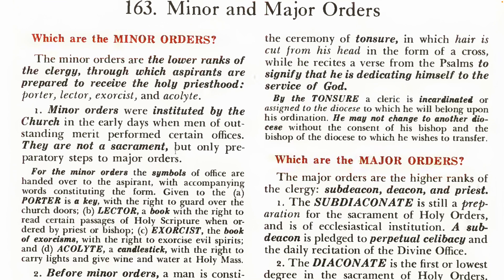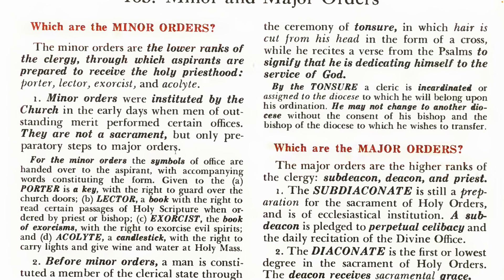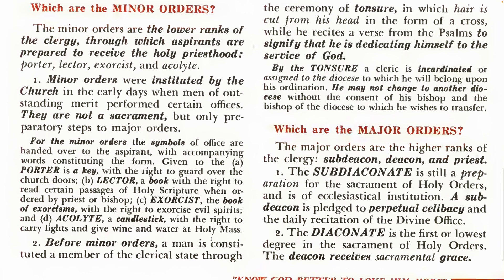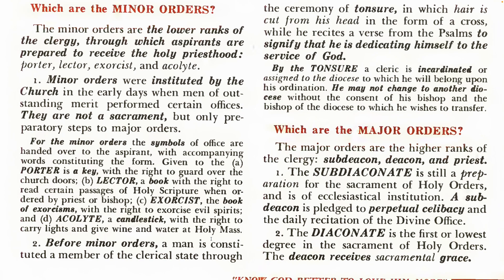The minor orders are the lower ranks of the clergy through which aspirants are prepared to receive the holy priesthood: porter, lector, exorcist, and acolyte. Minor orders were instituted by the church in the early days when men of outstanding merit performed certain offices. They are not a sacrament but only preparatory steps to major orders. The symbols of office are handed over to the aspirant with accompanying words constituting the form. Given to the porter is a key with the right to guard over the church doors.